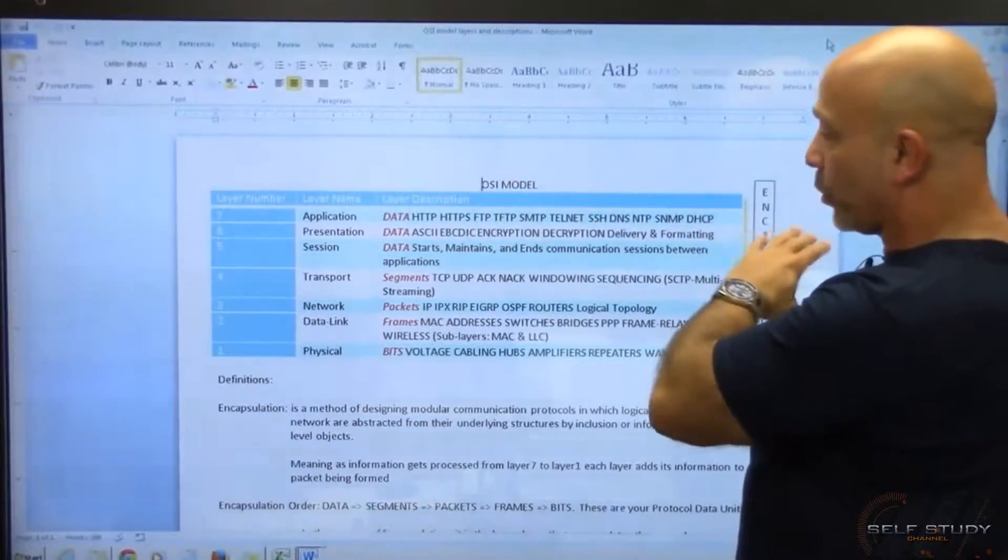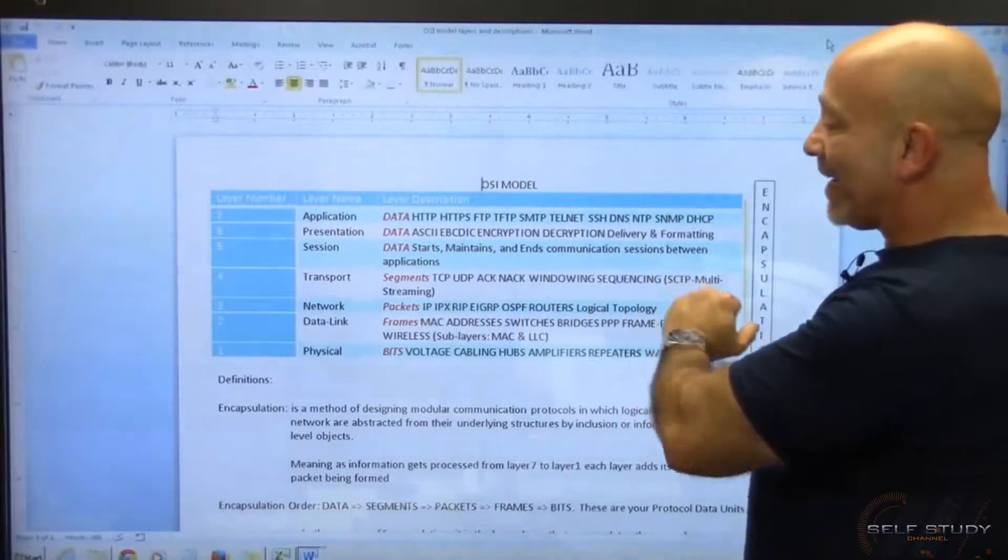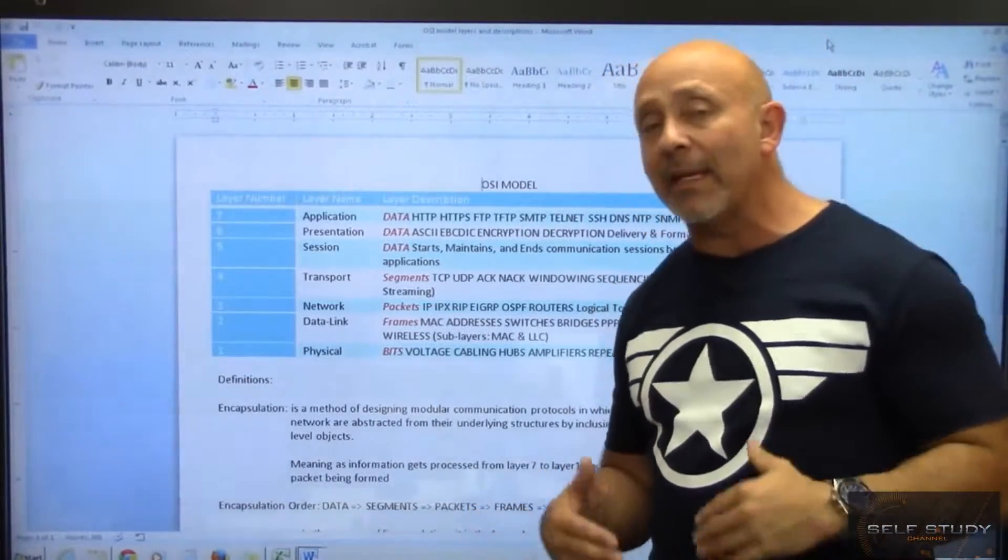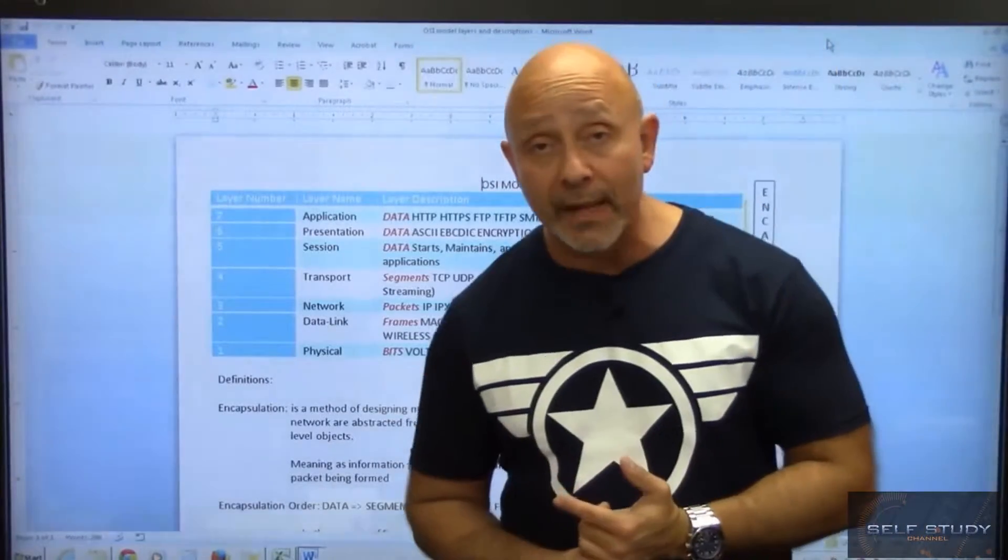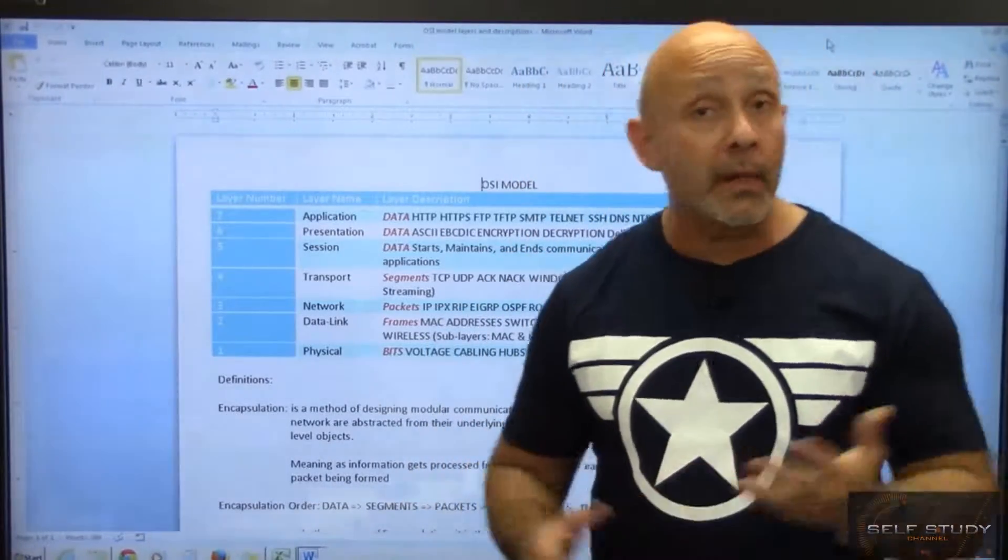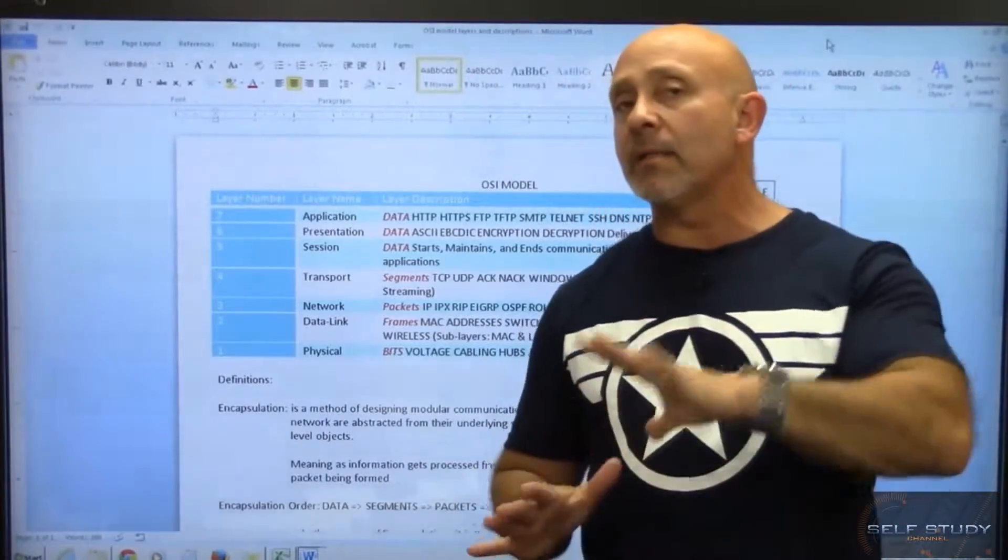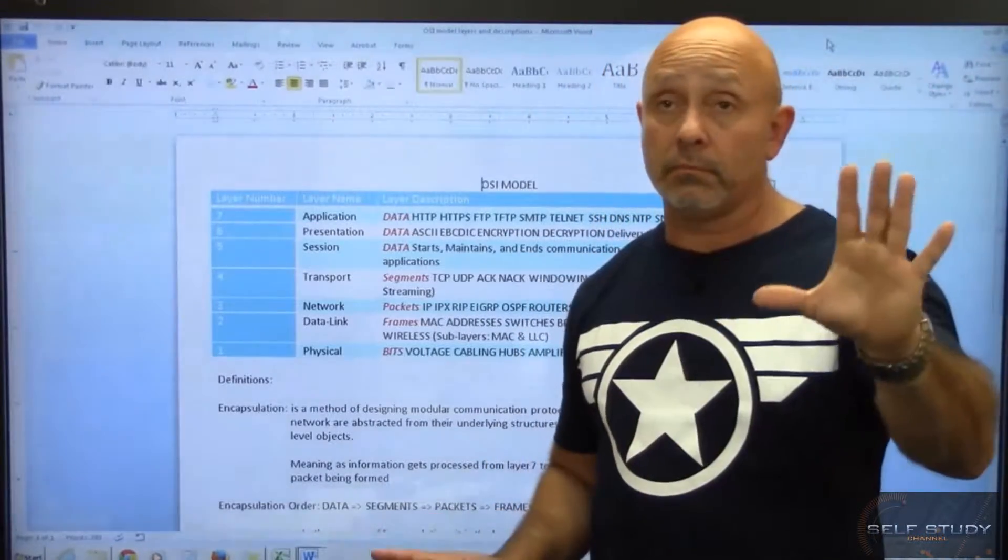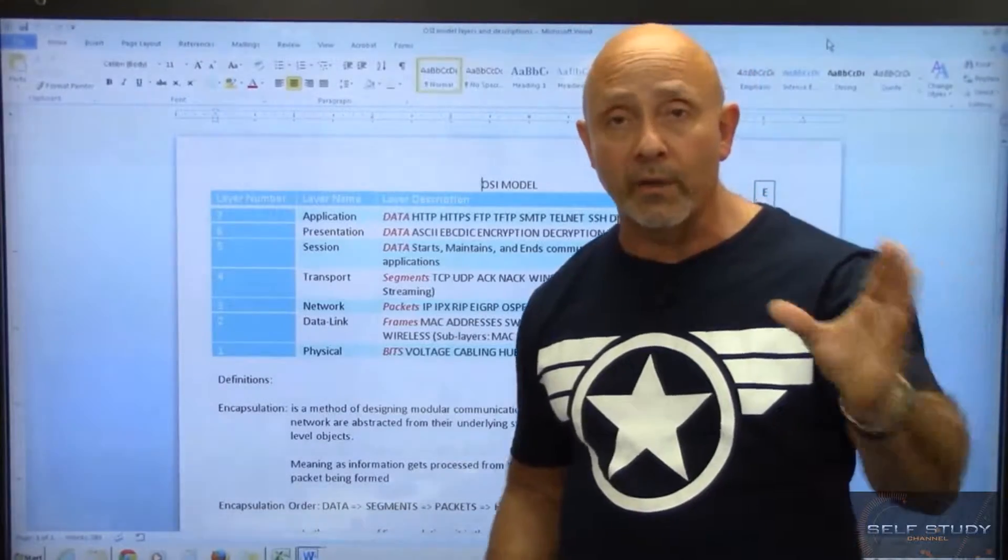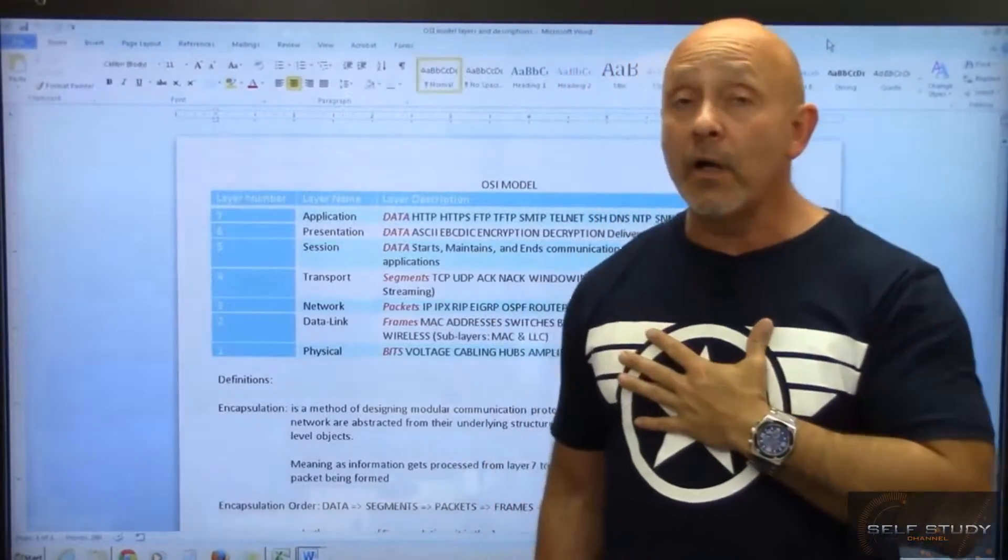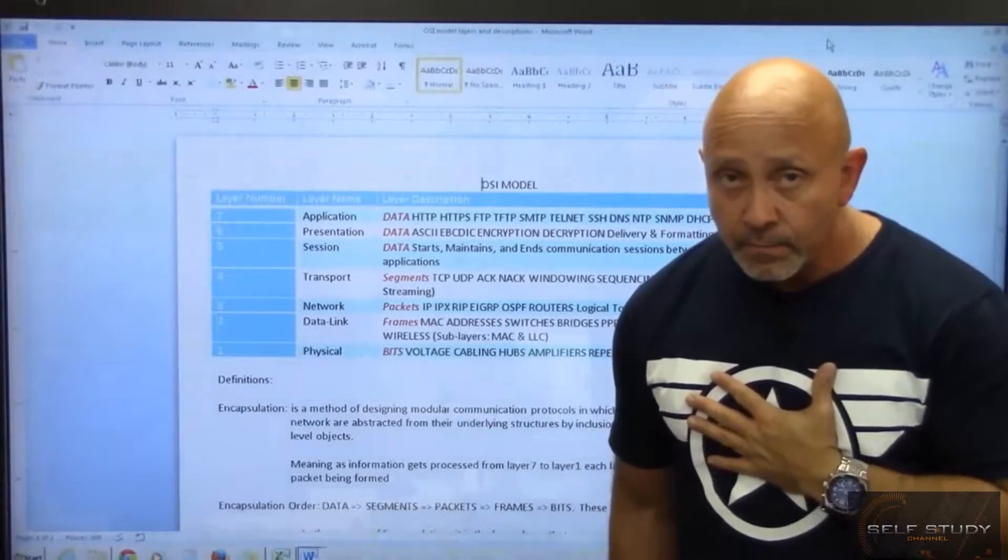You see there, there's different protocols and different things that each layer is in charge of. That's why they break it apart that way to make it where when vendors create their network cards or you're creating IPv6, you can do whatever you want to one layer. It's not going to damage or hurt the other layer whatsoever. You're focused on that one particular layer. As far as we're concerned.